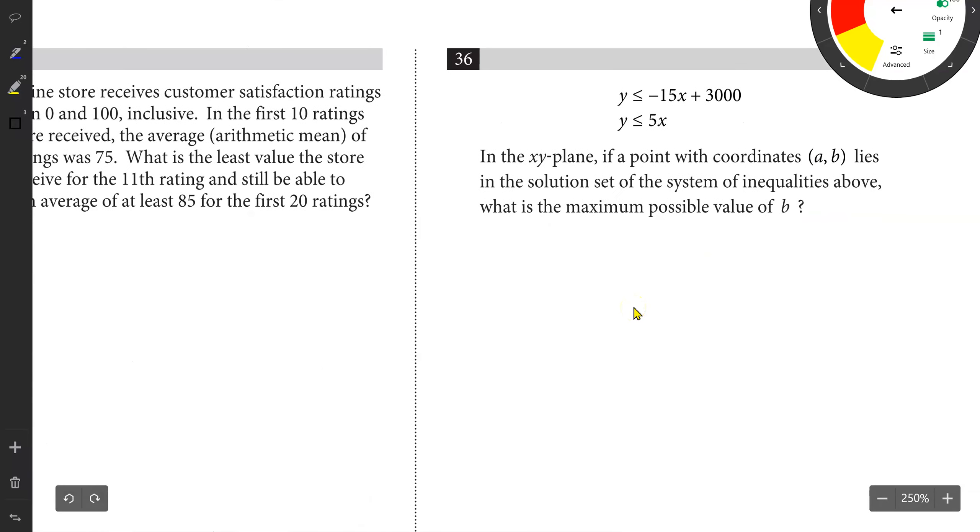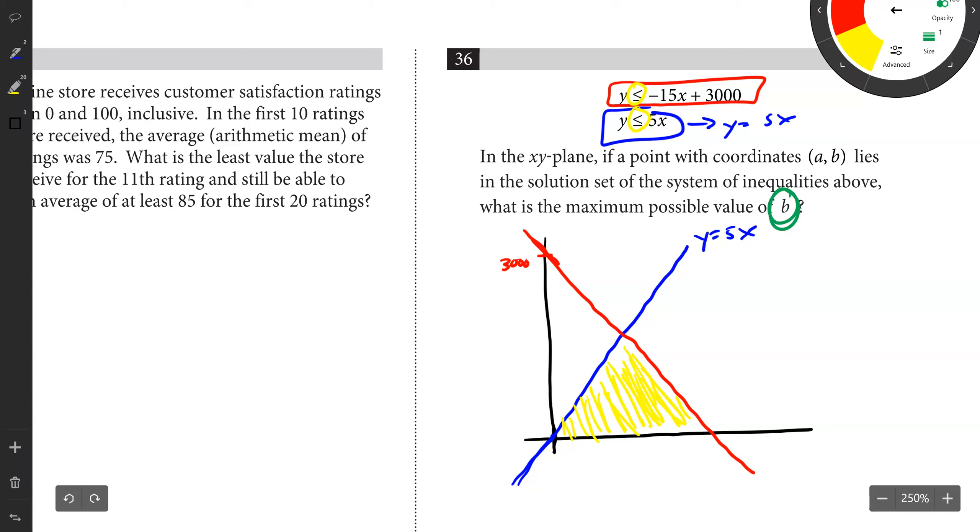Our last problem is number 36. In the xy plane, if a point with coordinates a comma b lies in the solution set of the system of inequalities above, what is the maximum possible value of b? It would help to look at this graphically. If we graphed this, imagine this is kind of a line, y equals 5x, that would have a slope, something like this. And if we were to graph the other one, you've got an intercept of 3000 and a slope of negative 15, so it's going to come down like this. Because they're inequalities, we'd actually be shading in between them, because it says less than and less than.